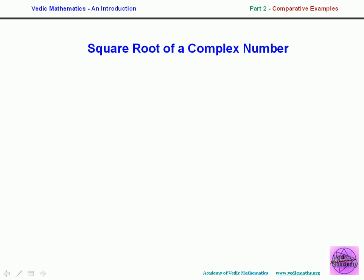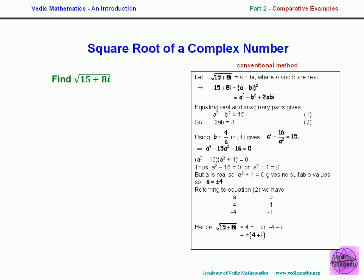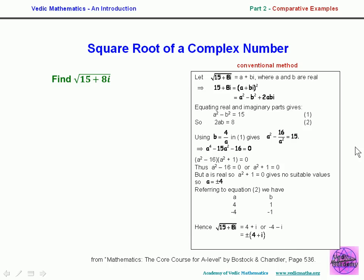For the square root of a complex number, such as the square root of 15 plus 8i (where i is the square root of minus 1), the conventional method requires letting the answer be a plus bi, squaring it out, and solving the resulting quartic equation — horrendous. The Vedic method simply allows you to write the answer down in one line.